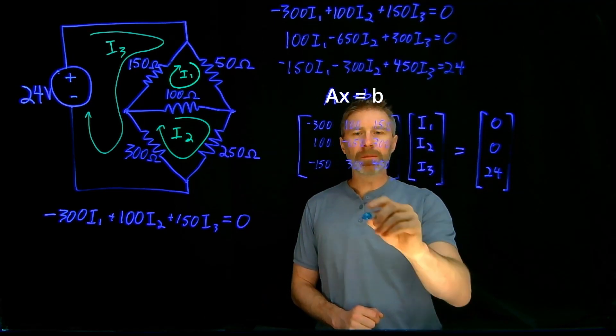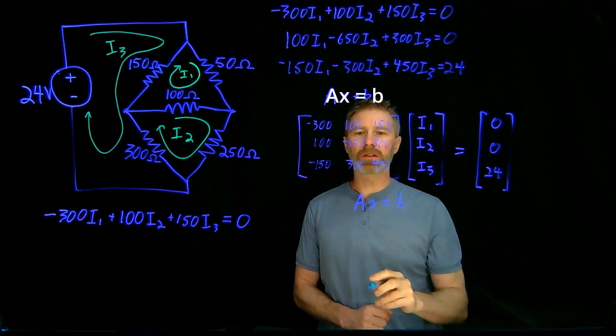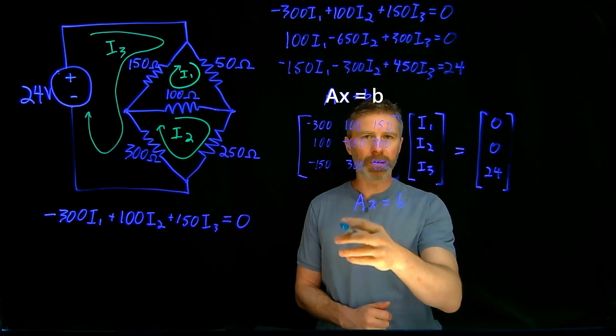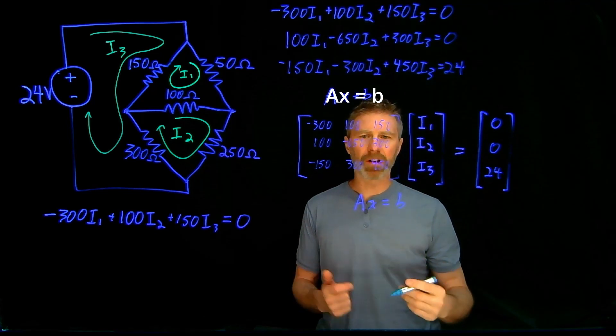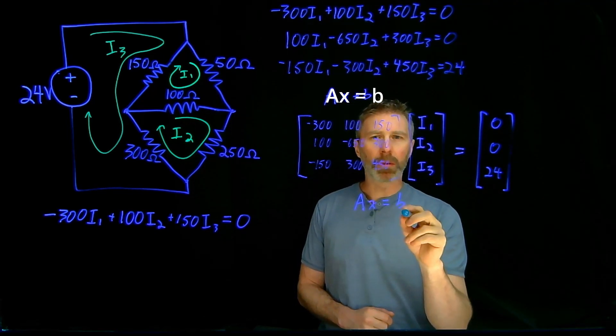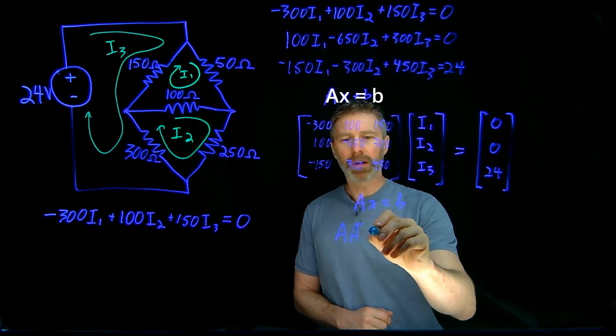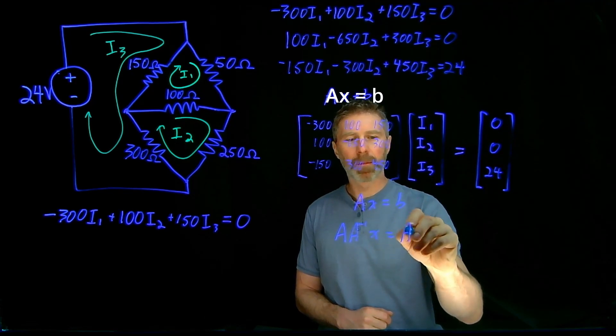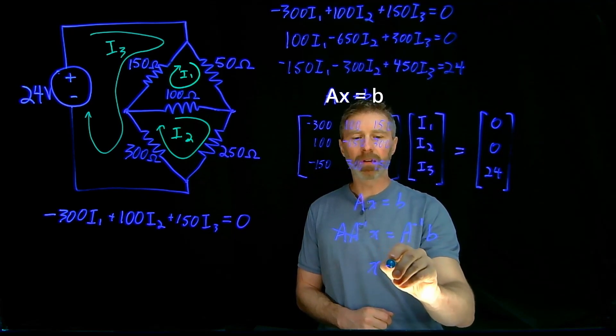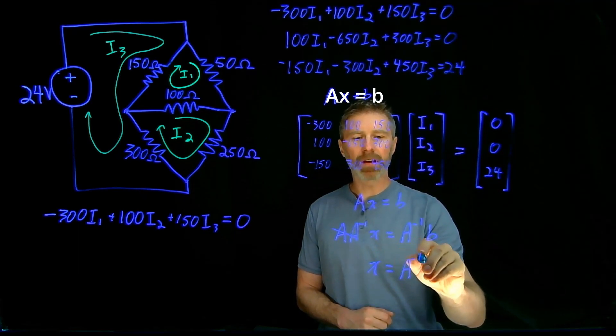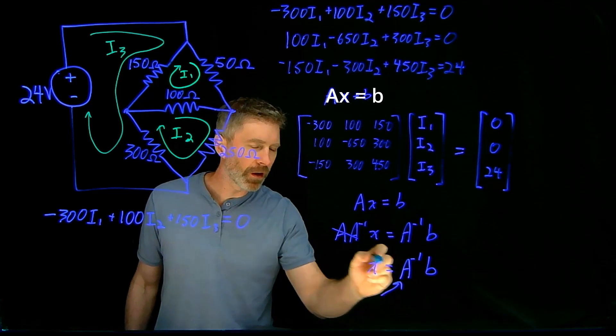So in this form, Ax equals b, we want to know what x is. Now if this was just basic algebra, and these are just represented numbers, we divide both sides by A, and then x is equal to b over A. Well, these are matrices and vectors. And so we can't divide by A, but what we can do is multiply by the inverse of A. So if we find the inverse of A, and multiply both sides of the equation by that, A times the inverse of A, those cancel out, and what we end up with is x is equal to the inverse of A times b.